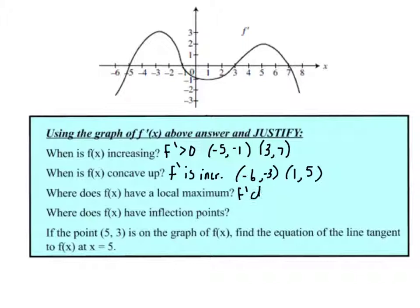Local maximums occur when f' changes from positive to negative. That occurs at x equals negative 1 and x equals 7.